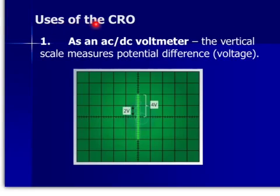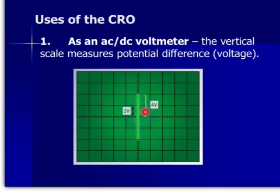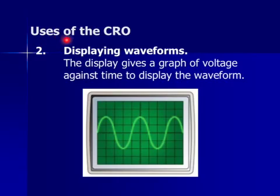Uses of the CRO: first, as an AC/DC voltmeter. The vertical scale measures potential difference or voltage — every vertical division represents two volts, and with two divisions shown, that is four volts. Second, displaying waveforms — the display gives a graph of voltage against time to show the waveform.